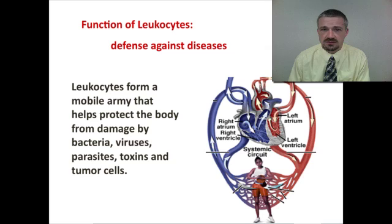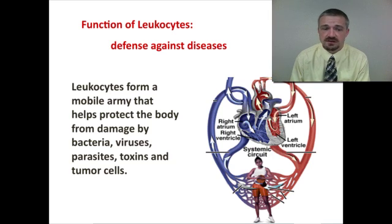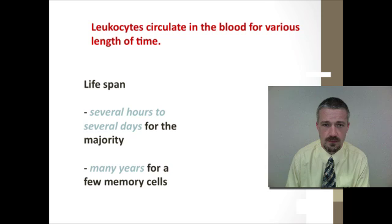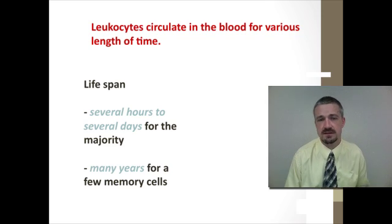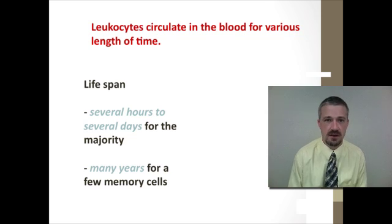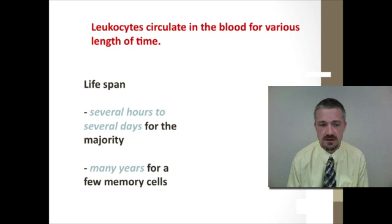The white blood cells perform most of the functions of the immune system. In terms of lifespan, these can range anywhere from a few hours to several days or even years, depending on which type of cell we're talking about.